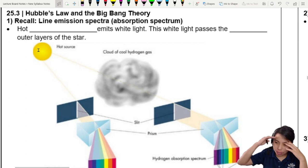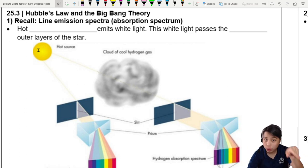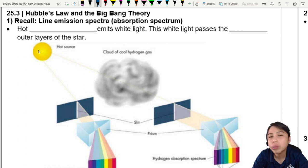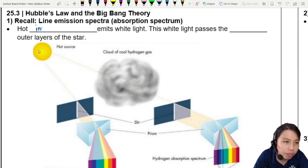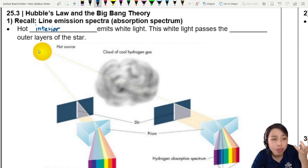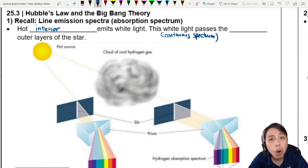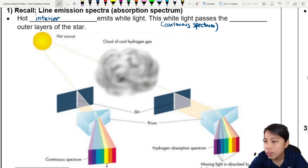The first thing we need to remember is absorption spectrum. We learned this in quantum physics chapter. There's this thing called line emission spectra or absorption spectrum. The idea is hot gas, especially in the center of a hot source like a star, emits white light. This white light is continuous spectrum, meaning there's all wavelengths. All rainbows of color.